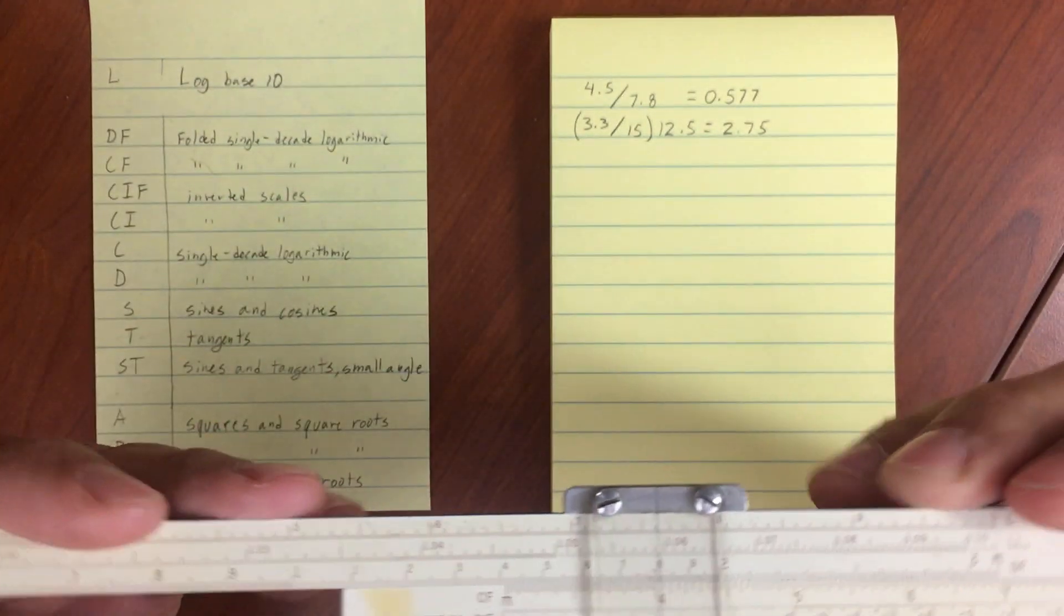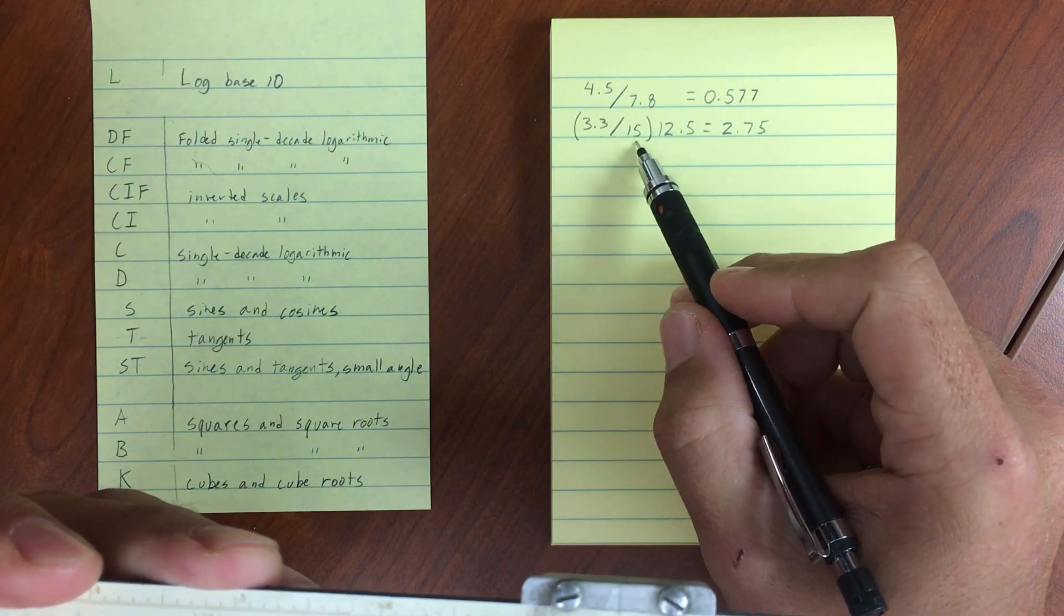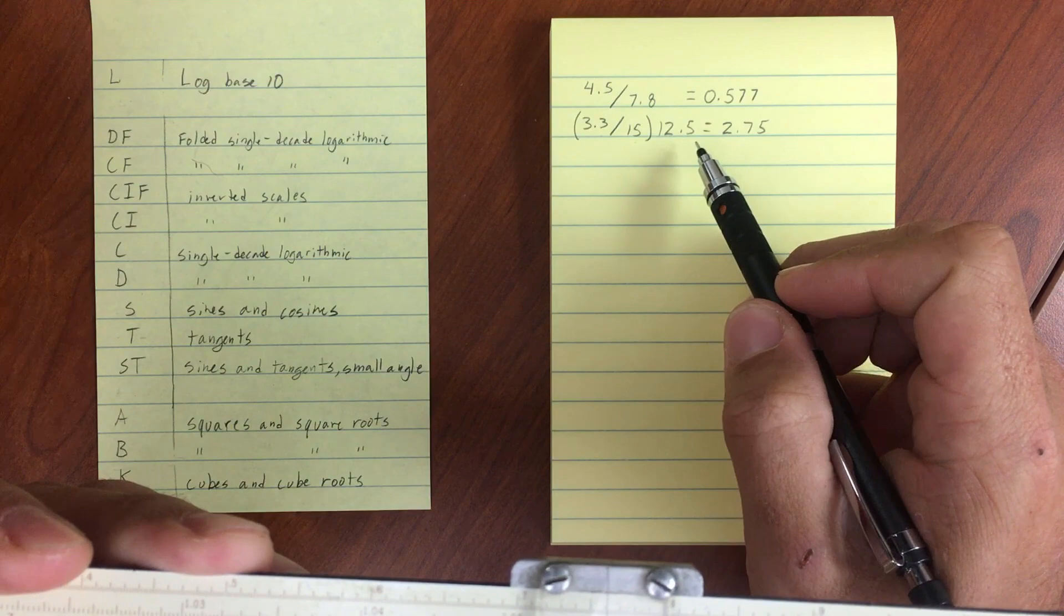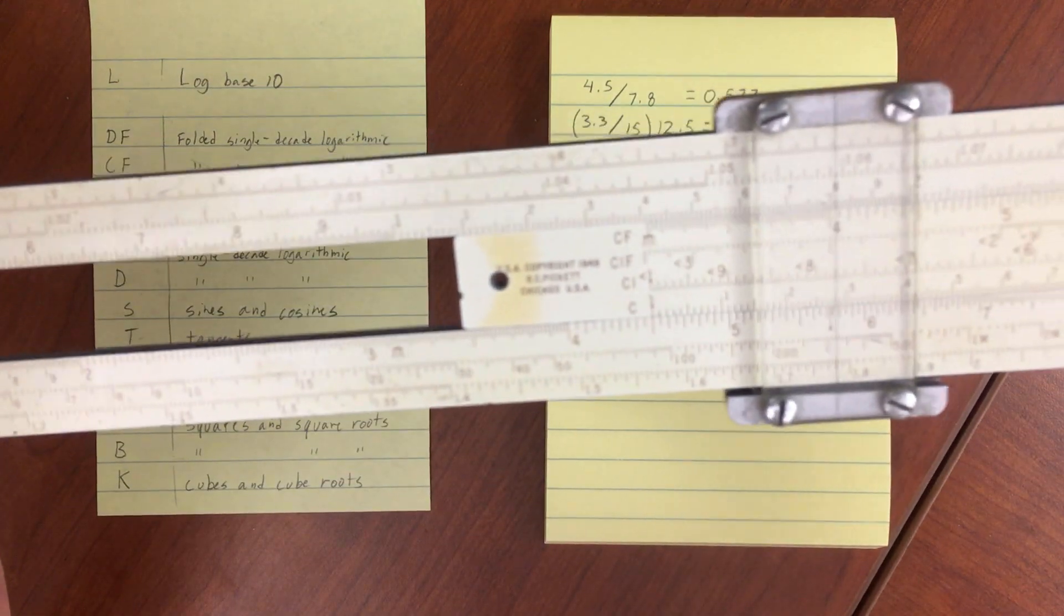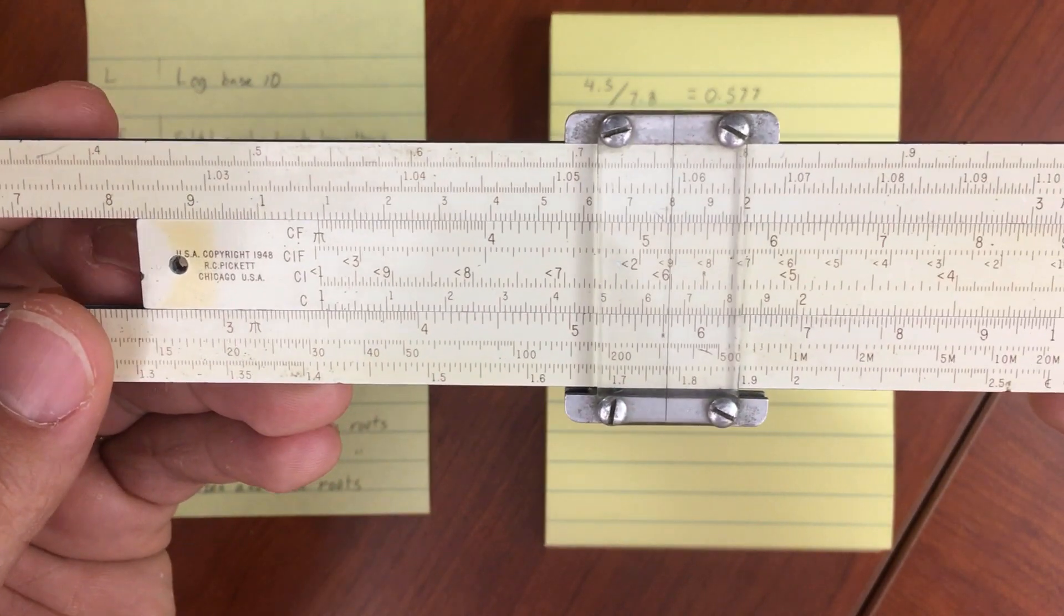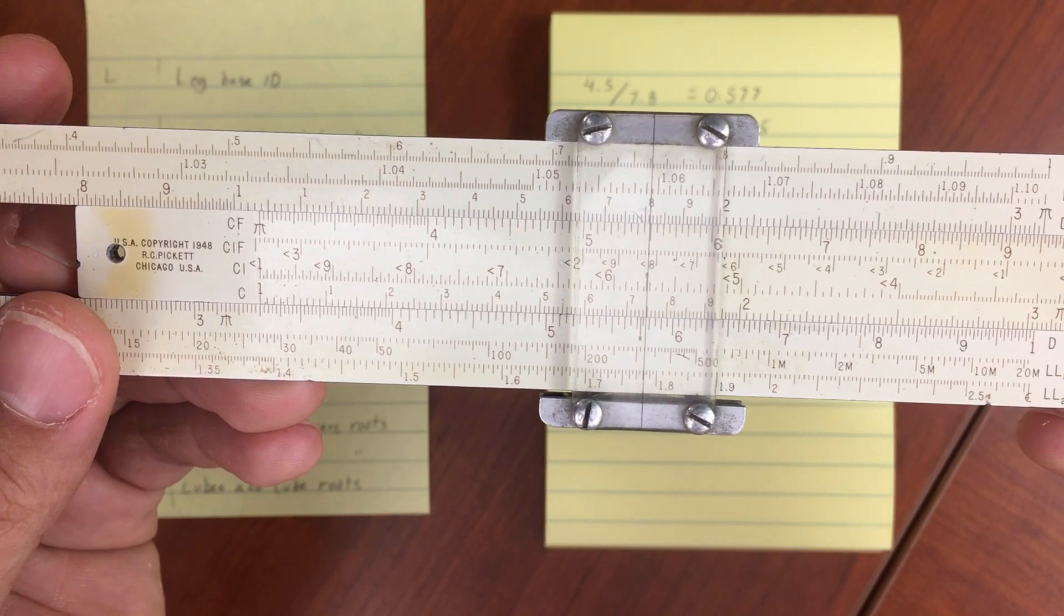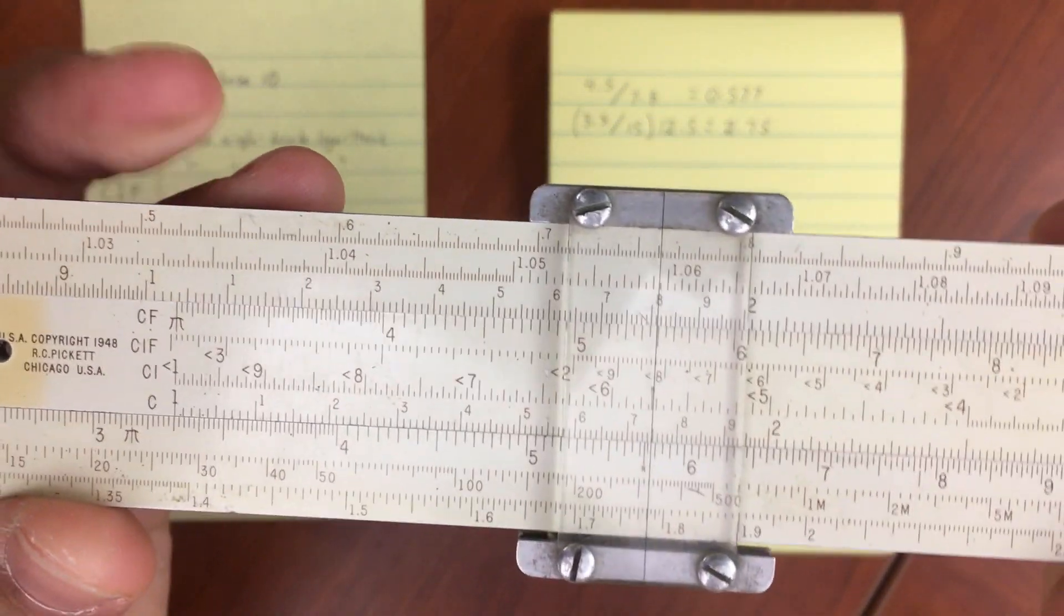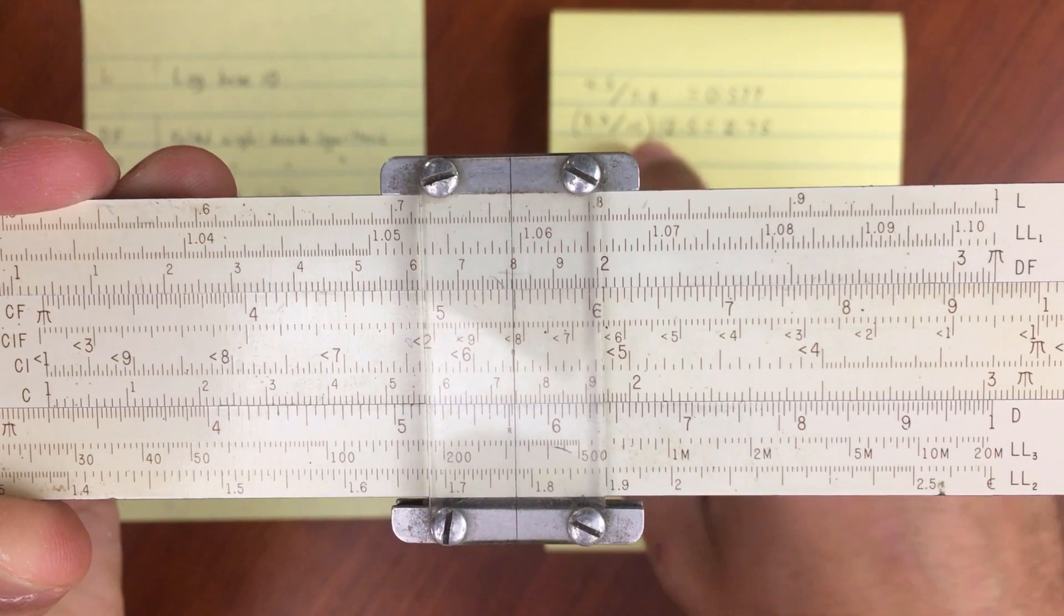Alright, let's do the next number, which is kind of a chain calculation. So I've done 3.3 divided by 15, and then multiply that by 12.5. So our first number is going to be 3.3. So let's index 3.3 right there. And then divide by our second number, 15 on the C scale.